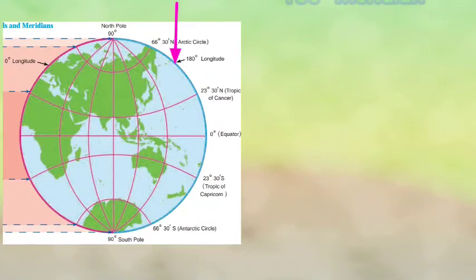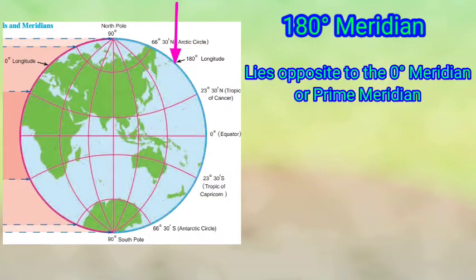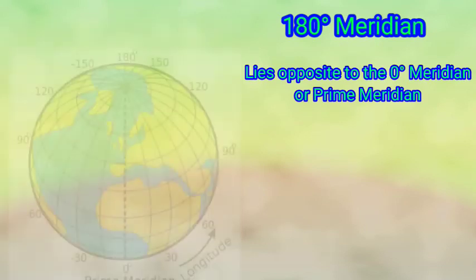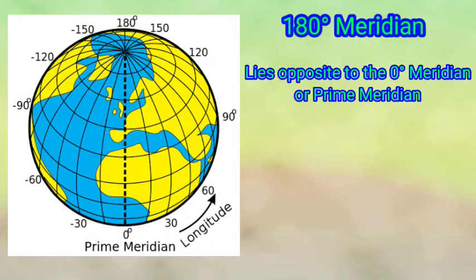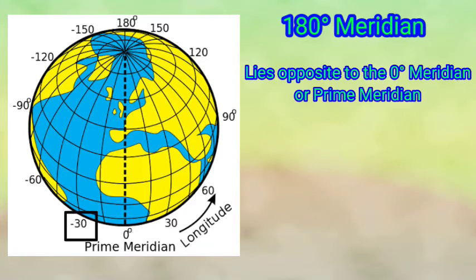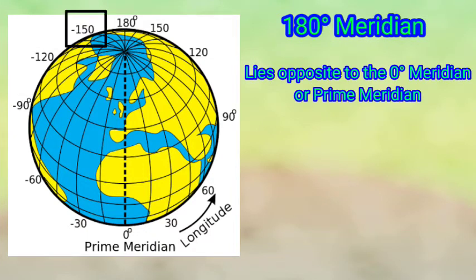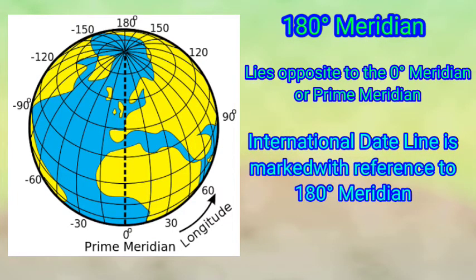Next: the 180° Meridian. This meridian lies opposite the zero degree Prime Meridian. All other meridians are marked from the Prime Meridian in both east and west directions up to the 180° Meridian. For example, in the eastern direction: 30°E, 60°E, 90°E, 120°E, 150°E; and in the western direction: 30°W, 60°W, 90°W, 120°W, 150°W. All meridians are thus marked from the Prime Meridian in both directions.